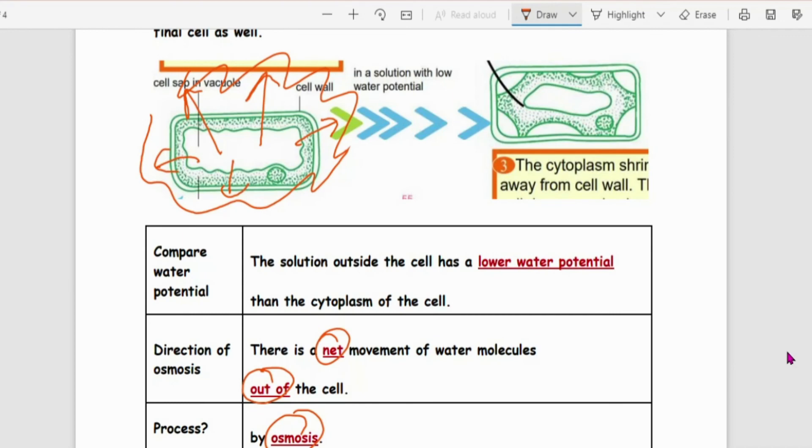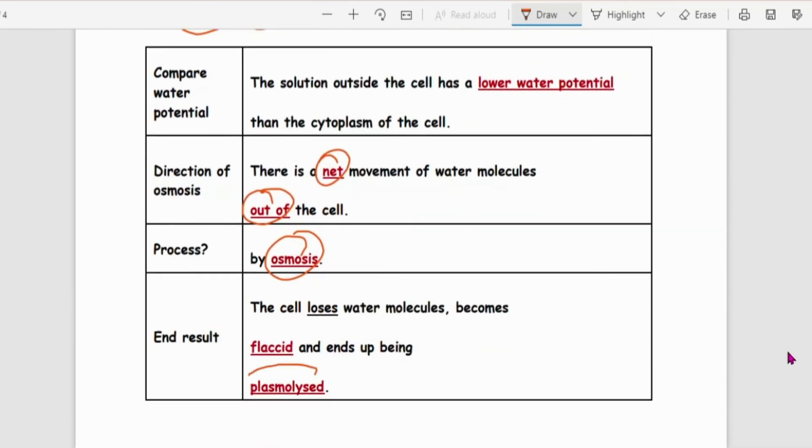Now although it looks a bit spiky spiky, remember, Crenated is only for animal cell. Again, Crenated is only for animal cell. So how to describe the plant cell here? The key term here is actually Plasmolyzed.